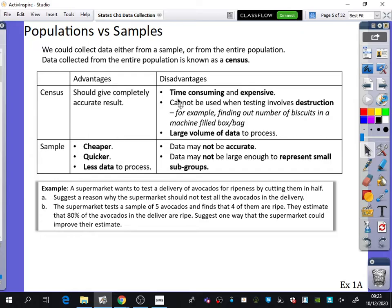But a disadvantage of a census is it's time-consuming and expensive. That's why we don't have a census every year—we have it every 10 years, and even then it's a huge undertaking.